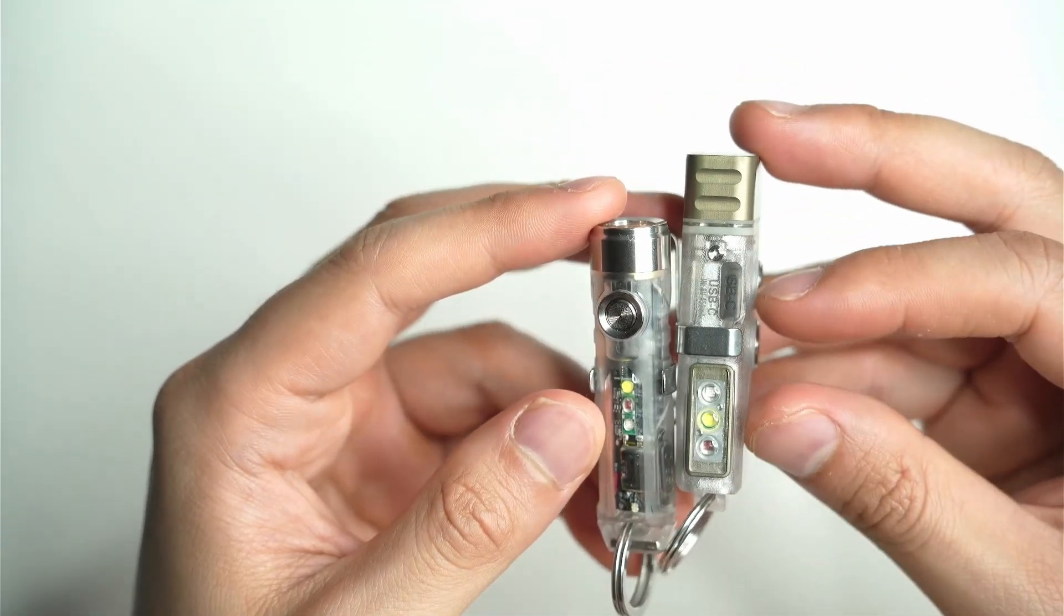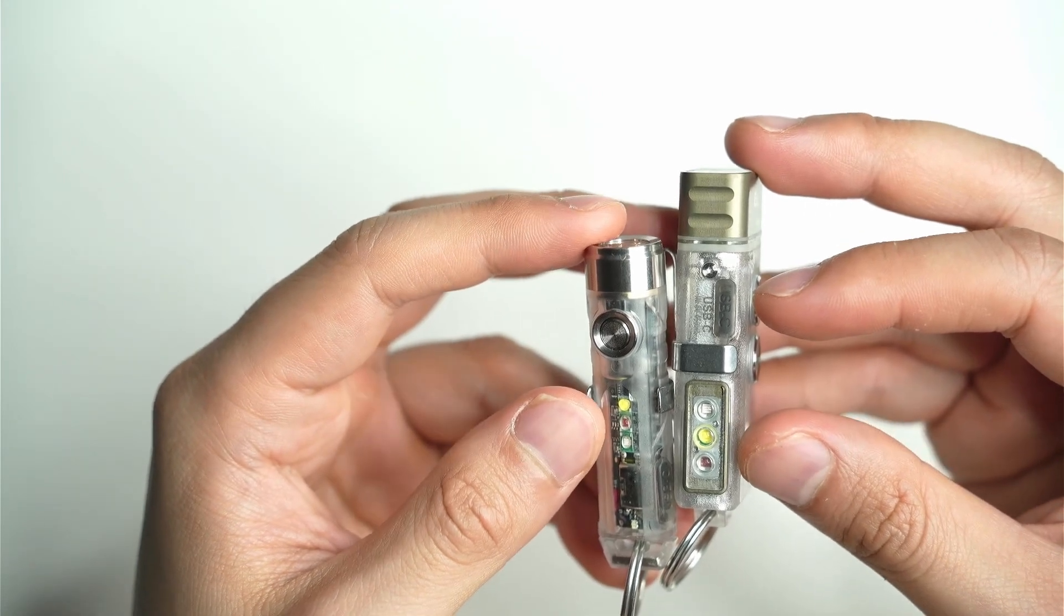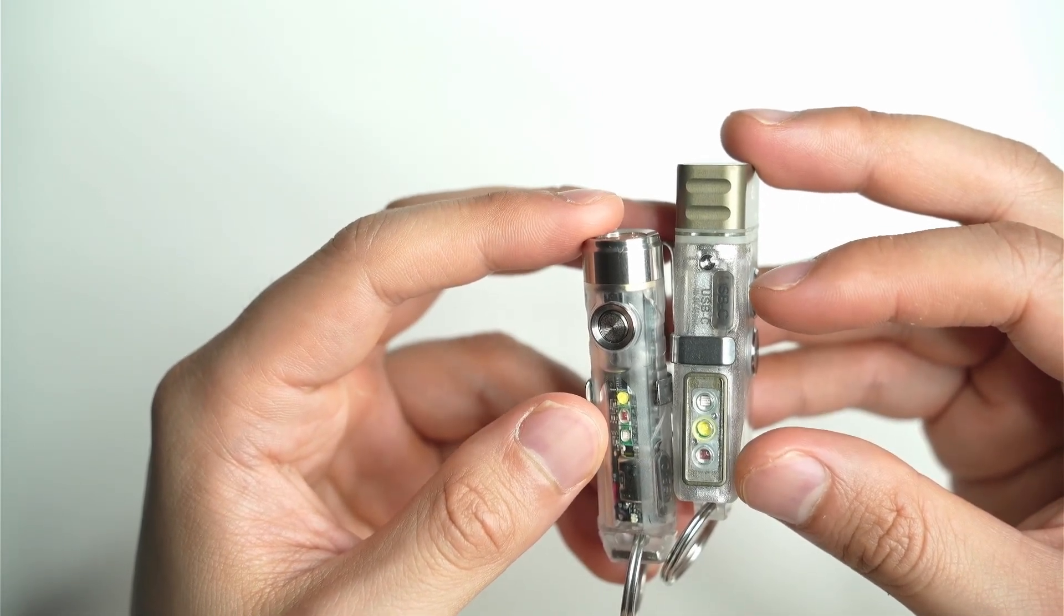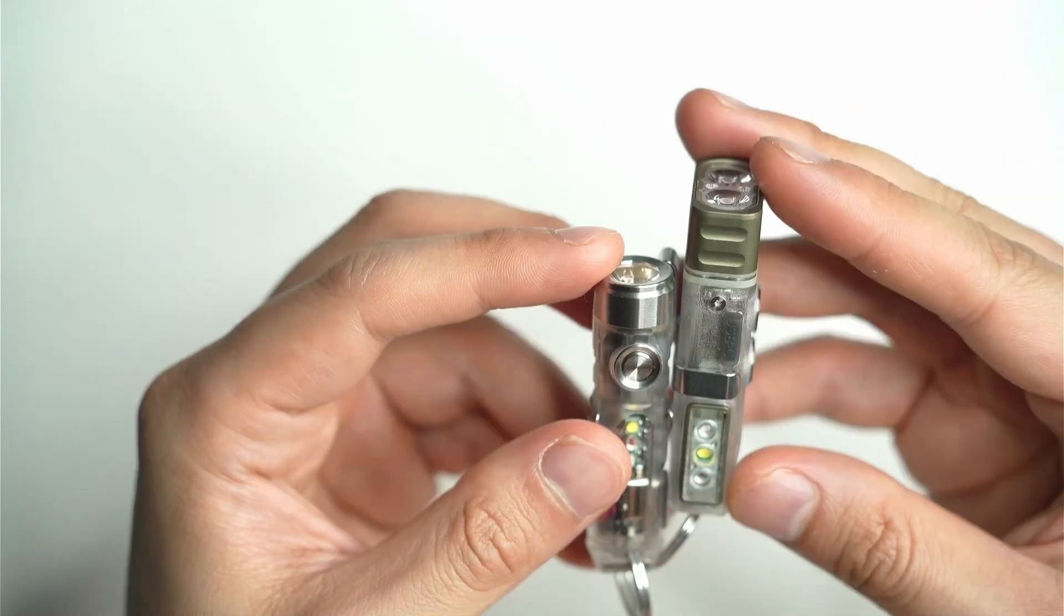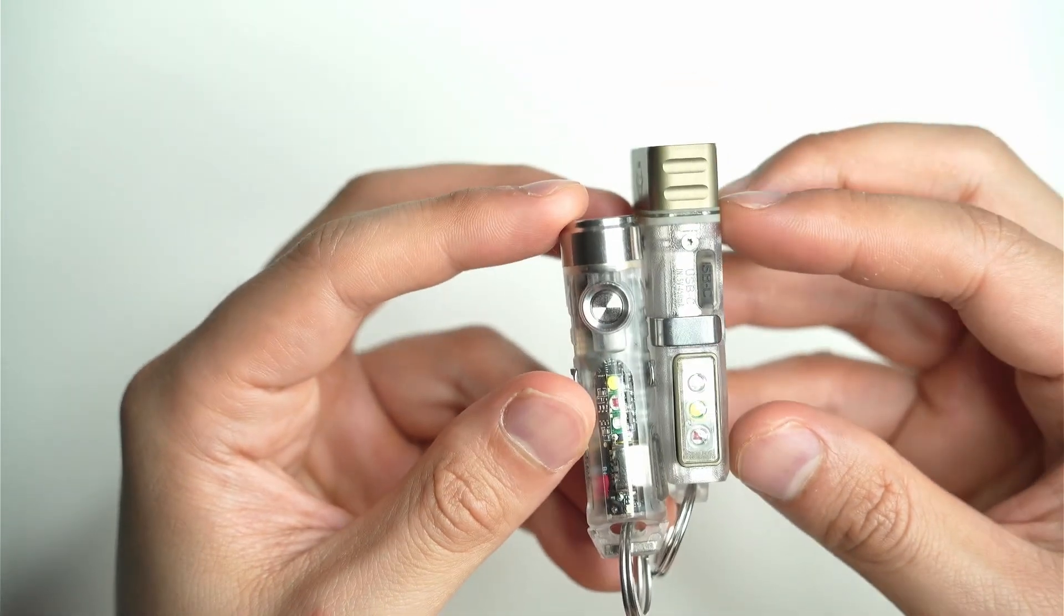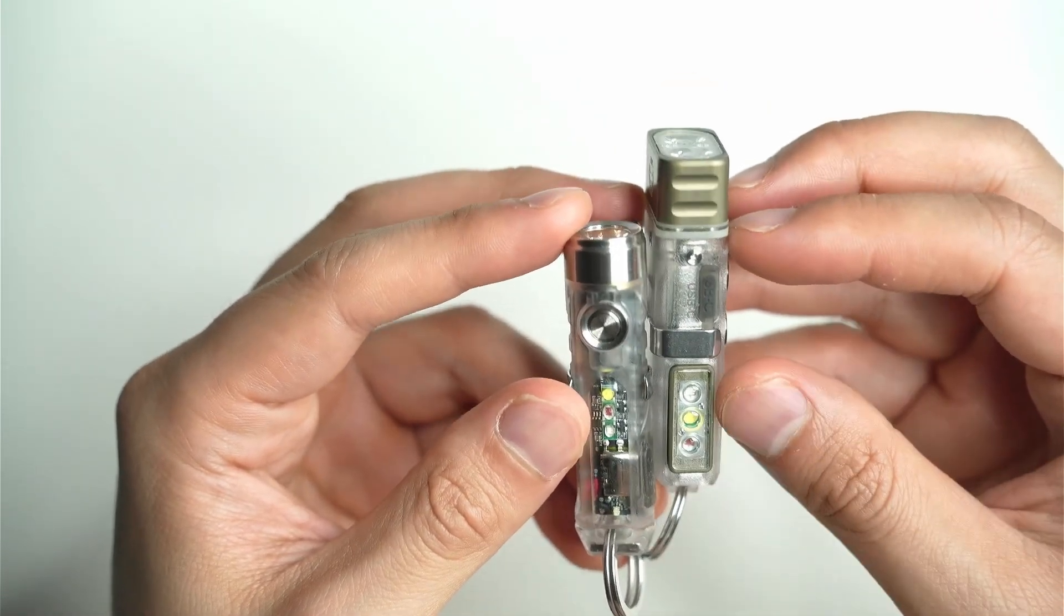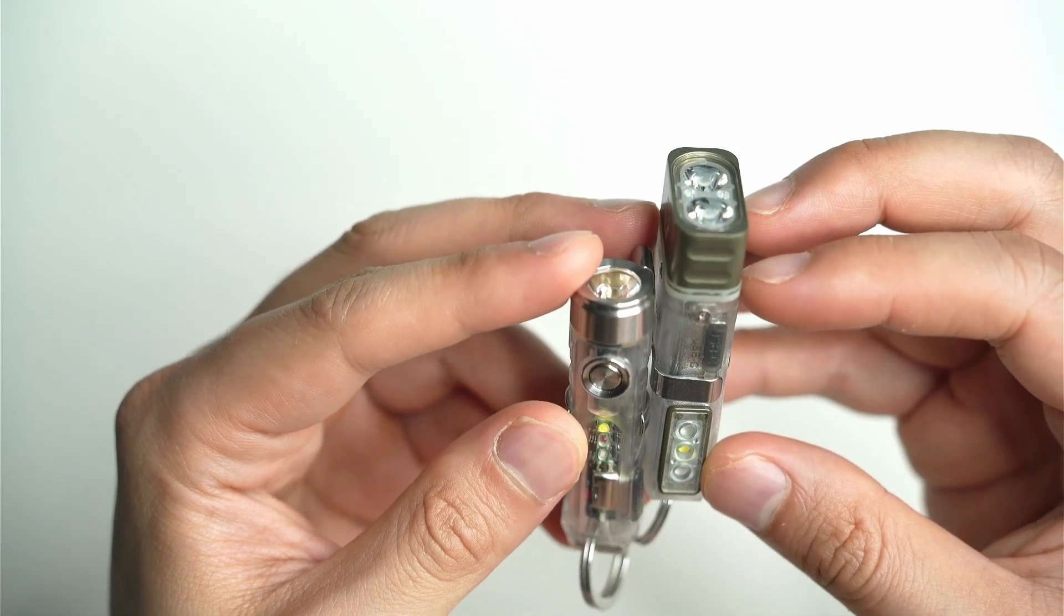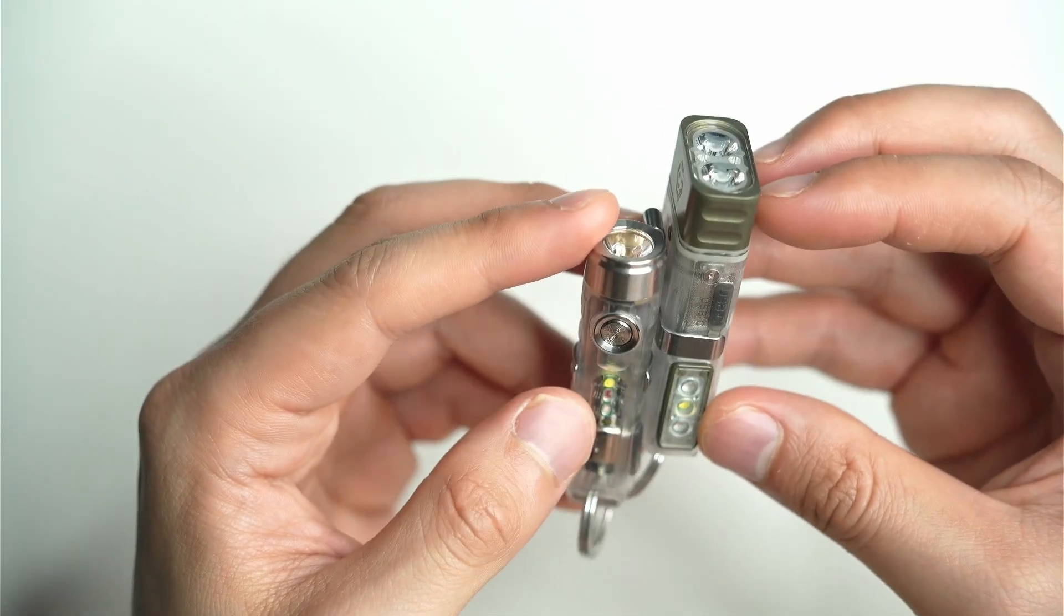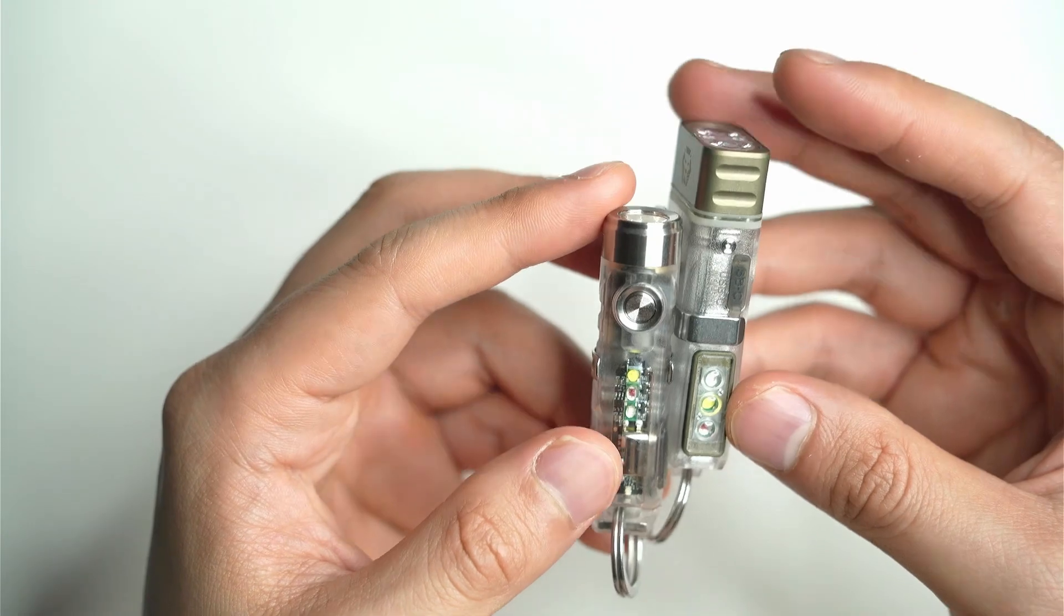You also have these auxiliary LEDs on both of them. You've got UV, you've got the normal white LED, and you've got the red LED on there as well. With the E8, the auxiliary LEDs are actually a little bit larger and they produce more light than the ones here on the A8.